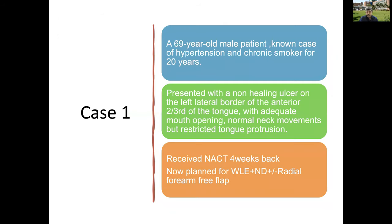Starting with a case: we often get a 69-year-old male patient who may be hypertensive or a chronic smoker, presenting with a non-healing ulcer in the tongue or lateral border of the cheek. On examination, mouth opening is usually normal, neck movements are normal, but there is some issue with protrusion of the tongue. They may have received neoadjuvant chemotherapy and are planned for a wide local excision with or without a flap, which may be a free flap or a PMMC.